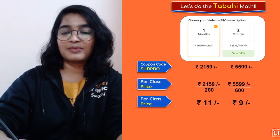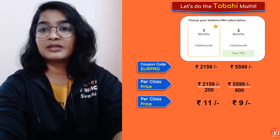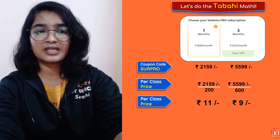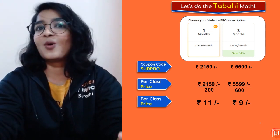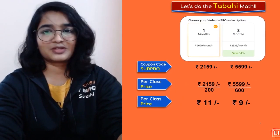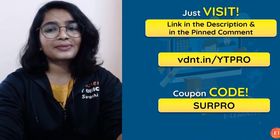The easiest way is vdnt.in/ytpro. Go choose your board, class and click on get subscription. The more number of classes, the less price you need to pay. Right now it's better to go for three months because we still have, for CBSE at least, four months in your hands. Go for the three months subscription - it will be a good one.